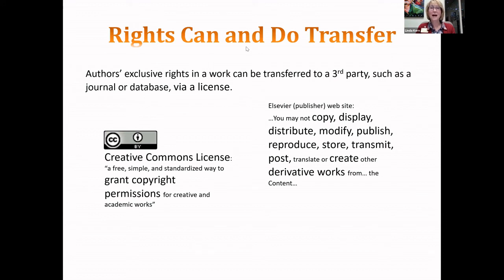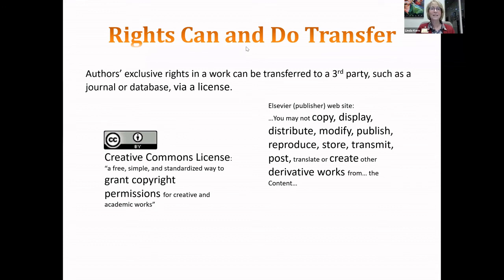Authors and creators do assign their rights to other people, sometimes at a cost, sometimes for free. One way you might see rights transferred is via a Creative Commons license—widely available, can be used by anyone. That license allows someone the rights to distribute content, post on the web, reproduce it, and make copies. A Creative Commons license transfers those rights to you so you can include the work in your thesis or dissertation.